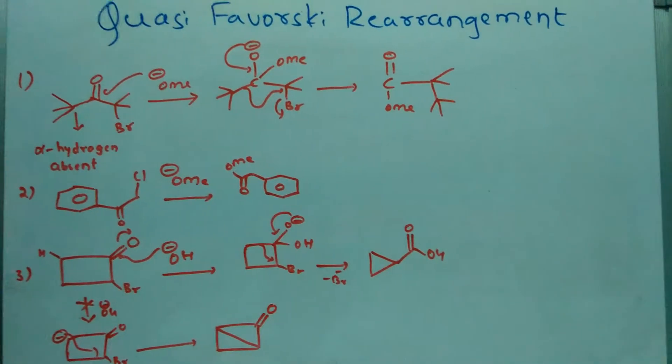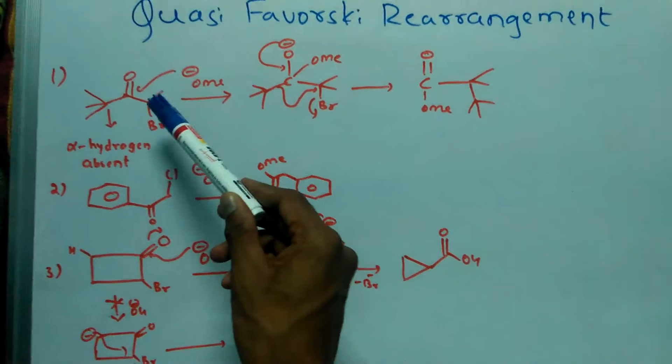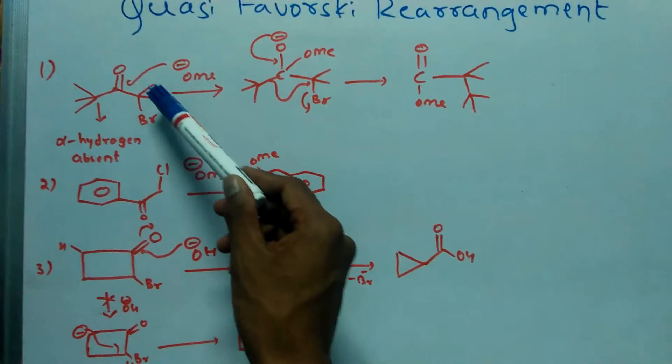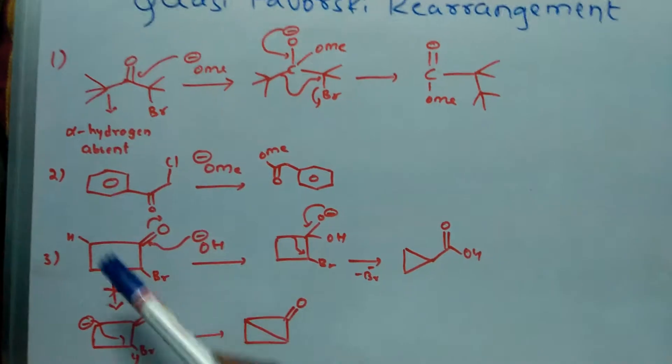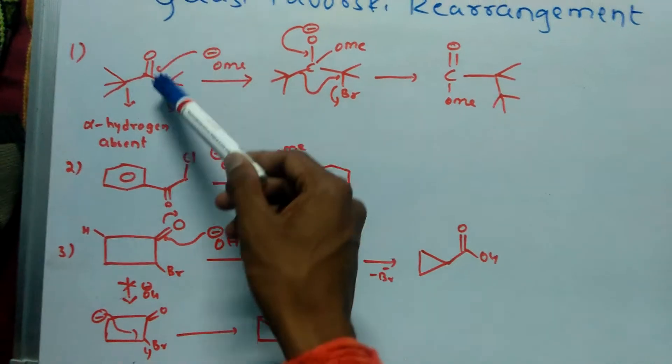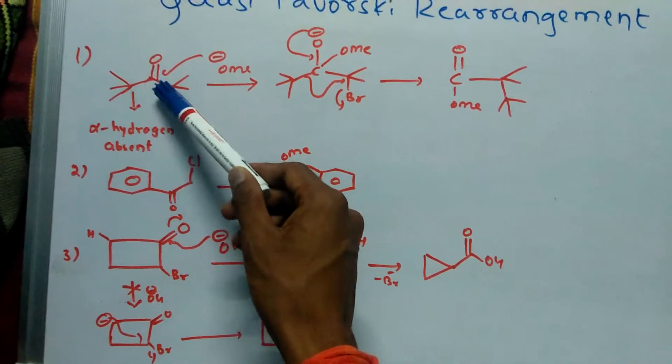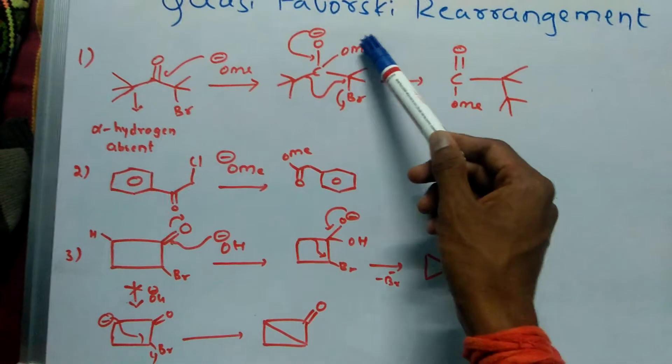Because here there is absence of alpha-hydrogen in this alpha-halo-ketone, an alkoxide ion attacks the electrophilic carbonyl carbon, and it forms like this.